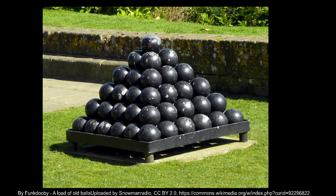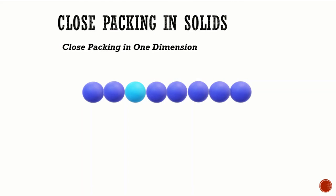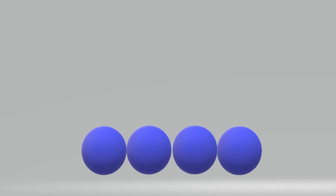Let us understand close packing in one dimension. Here each sphere touches two neighboring spheres, and thus the coordination number for each sphere is two.